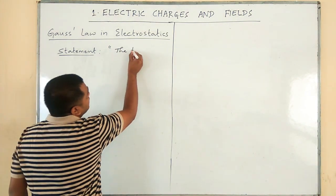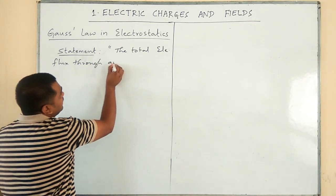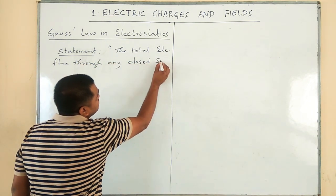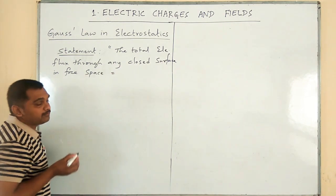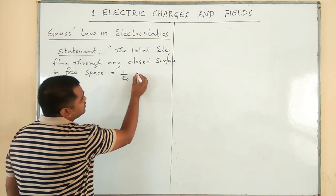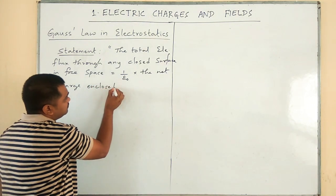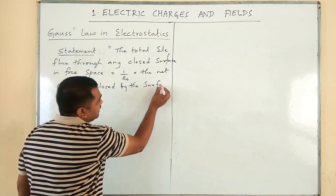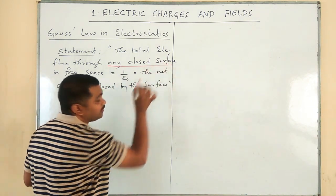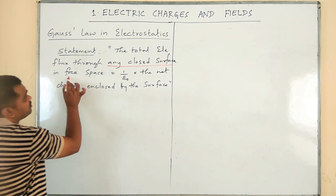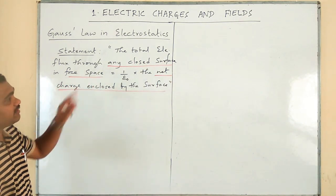The statement says: the total electrical flux through any closed surface in free space is equal to 1 over epsilon times the net charge enclosed by the surface. These three words are very significant: any closed surface, free space, and the net charge enclosed by the surface.